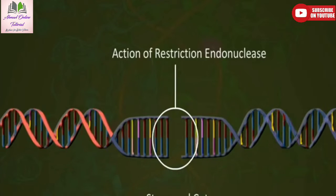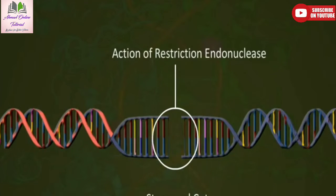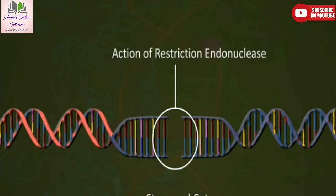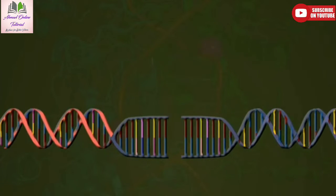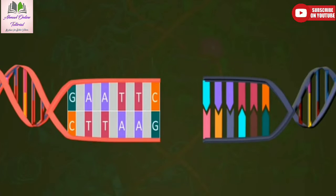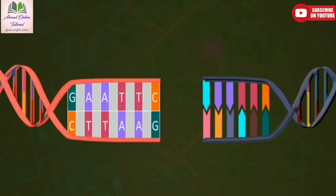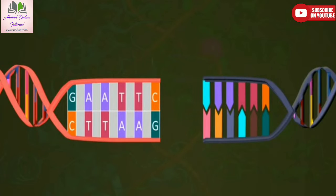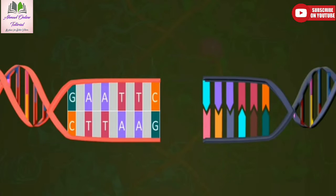Most Restriction Enzymes cut DNA at different locations. Such cleavage is termed a Staggered Cut. ECO-R1 recognizes the palindromic sequence — that is, a group of letters that form the same words when read both backward and forward. Let's understand the action of ECO-R1.